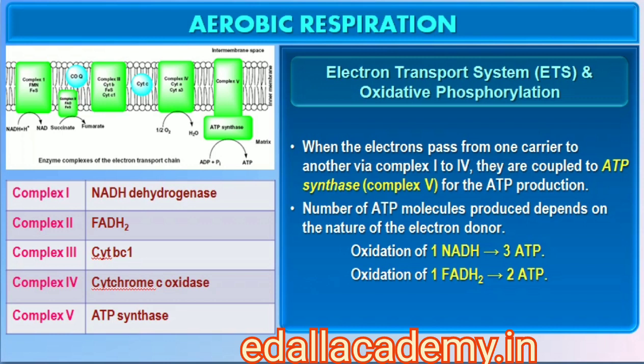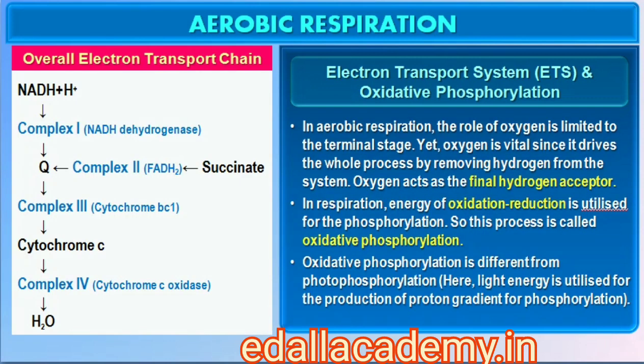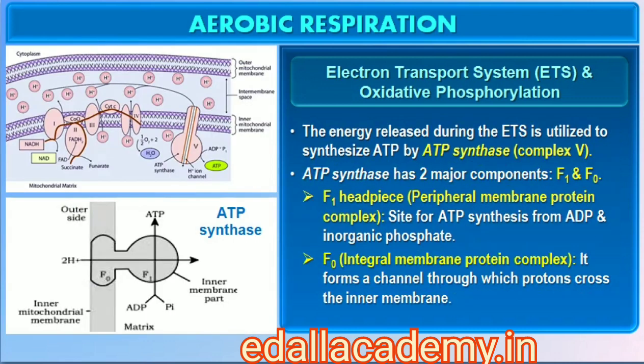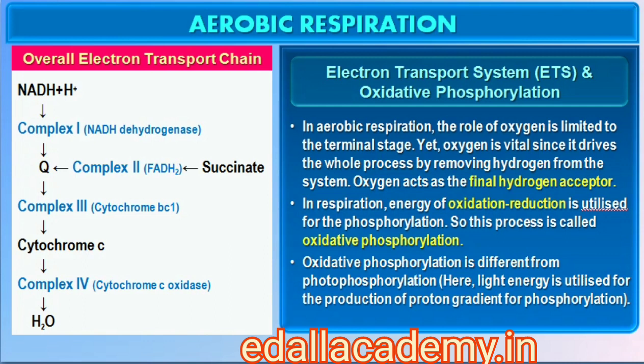The number of ATP molecules synthesized depends on the nature of the electron donor. Oxidation of one molecule of NADH gives rise to three molecules of ATP, while that of one molecule of FADH2 produces two molecules of ATP. Although the aerobic process of respiration takes place only in the presence of oxygen, the role of oxygen is limited to the terminal stage of the process. Yet the presence of oxygen is vital, since it drives the whole process by removing hydrogen from the system — oxygen acts as the final hydrogen acceptor.